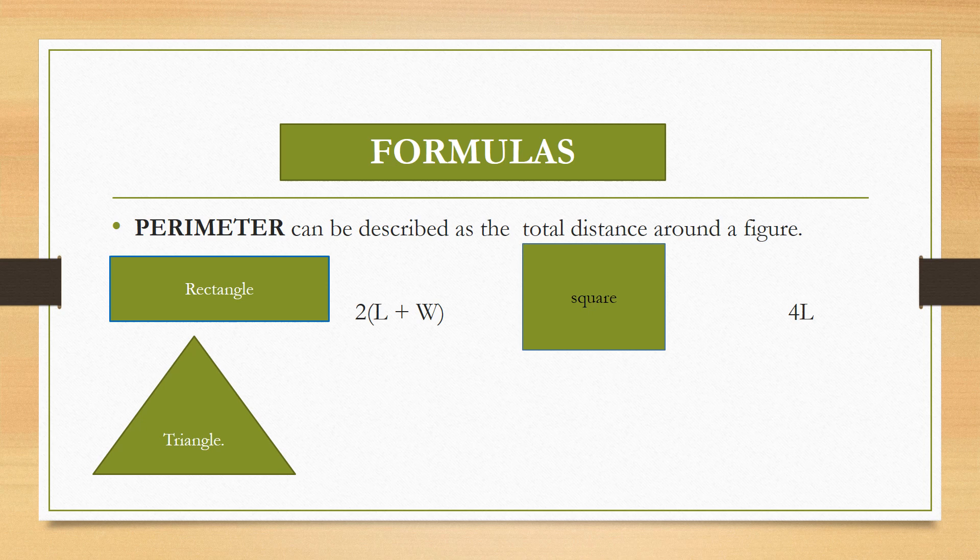When you were in Class 4, you learnt about the perimeter of a square and rectangle. We also learnt that a rectangle has two opposite sides which are equal, so to find its perimeter you will just add the length plus the width and then multiply your answer by 2. In the case of a square, we said all sides are equal, so we will just multiply four times the length. If it is a triangle, we will add the sum of all three sides. These formulas will be helpful as we progress with the lesson and tackle more examples on perimeter.